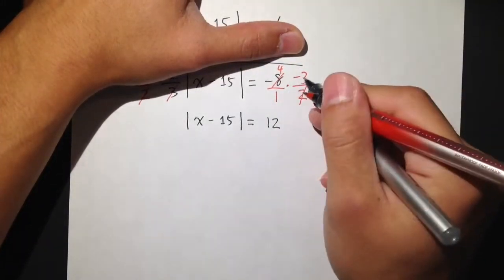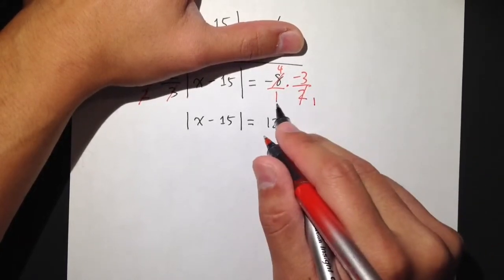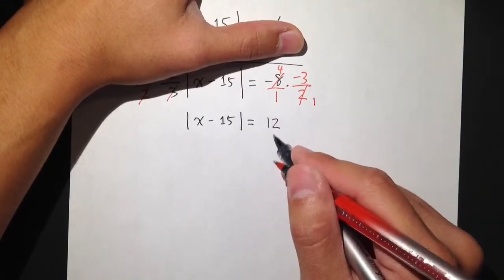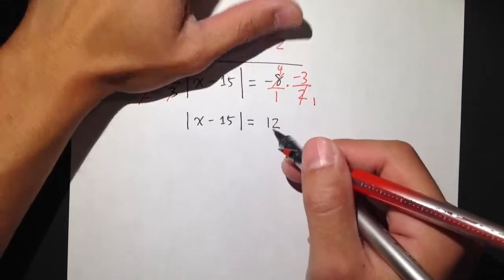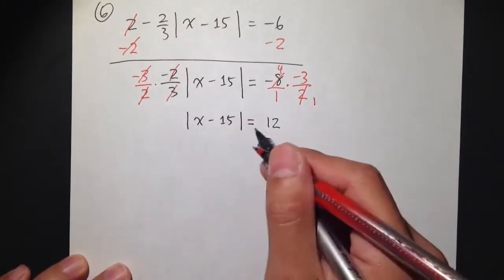Multiply the top and top, and over bottom times bottom, which is 1 times 1. So the result is 12 over 1, but over 1 doesn't matter. So that's why I can just put 12 right here. And then we did it. Absolute value is by itself.